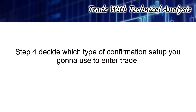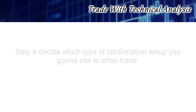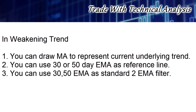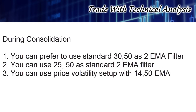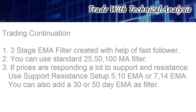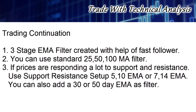Step 4 is to decide which type of confirmation setup you are going to use to enter the trade. In a weakening trend you can draw a moving average to represent the current underlying trend, or you can use 30 or 50 day EMA as reference lines, or use 30-50 EMA as a standard 2 EMA filter. During consolidation you can prefer to use standard 30-50 or 25-50 as a 2 EMA filter, or you can use a price volatility setup with 14 and 50 EMA to detect change in price volatility in the direction of the trend. In case of continuation you have more than enough options to trade.